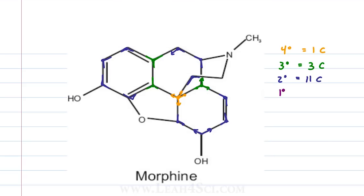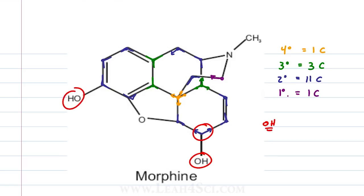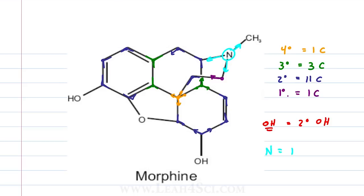Next we move on to primary carbons. That one is not a primary carbon because it's not bound to another carbon atom. This would be a primary carbon because it's bound to carbon and nitrogen — we have just one primary carbon. Now let's look at our alcohols. We have this oxygen sitting on a secondary carbon, as is this other oxygen — that gives us two secondary alcohols. And the amine — remember it has its own classification. We're looking at the number of bonds coming out of the nitrogen atom: one, two, three — one tertiary amine.